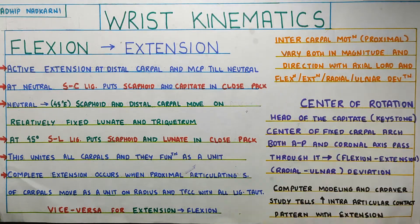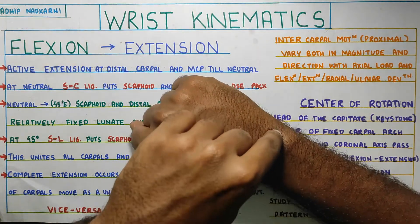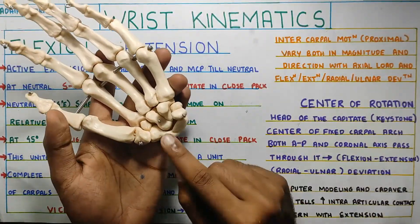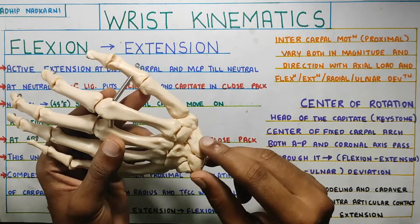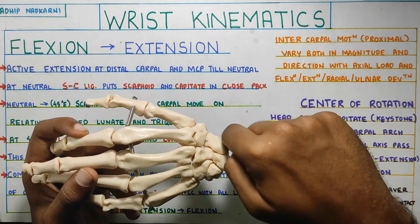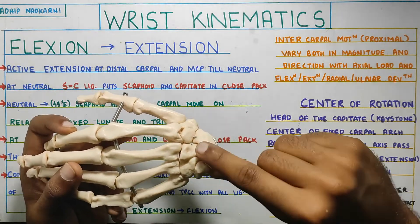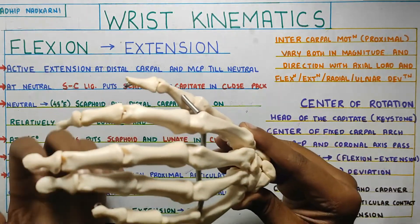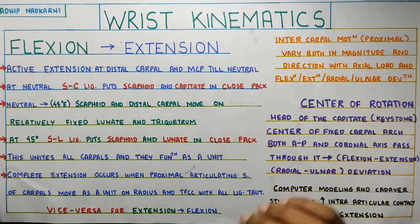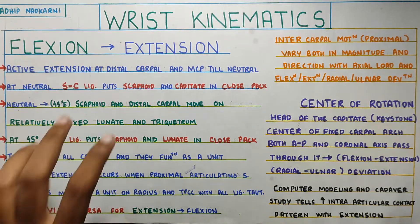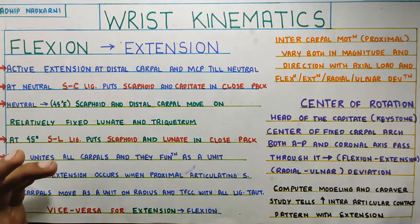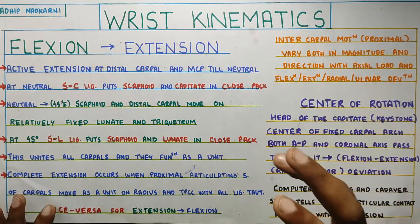Then another researcher called Gracia came and said that basically your scaphoid and lunate go for opposite motion. That is, from flexion when you are going to extension, the scaphoid goes for a downward movement whereas the lunate goes for an upward movement, creating a counter-rotation movement, and then extension happens. Another person came with yet another theory. The theory about movement at the wrist joint is highly variable. What we are going to learn is the model given by Conwell, which is slightly oversimplified but is the best we have right now.